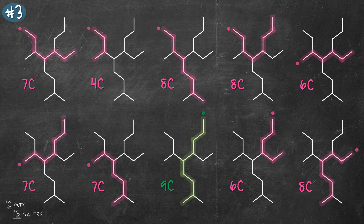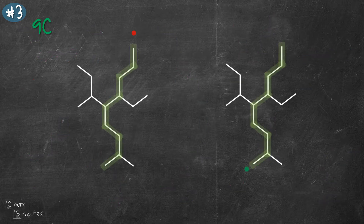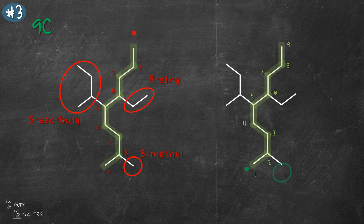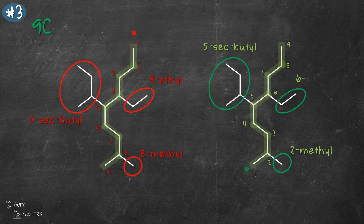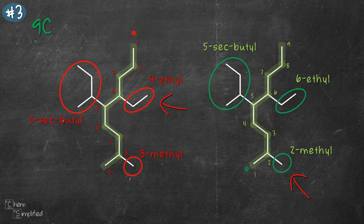Now that we've found our longest chain, let's number it. Numbering from the top gives three substituents: ethyl at carbon 4, sec-butyl at carbon 5, and methyl at carbon 8. Numbering from the bottom gives the same substituents at different locations: 2-methyl, 5-sec-butyl, and 6-ethyl. We go with the bottom numbering because it places the first substituent at carbon 2, whereas counting from the top places the first substituent at carbon 4. After all, 2,5,6 is a lower numbering set compared to 4,5,8.